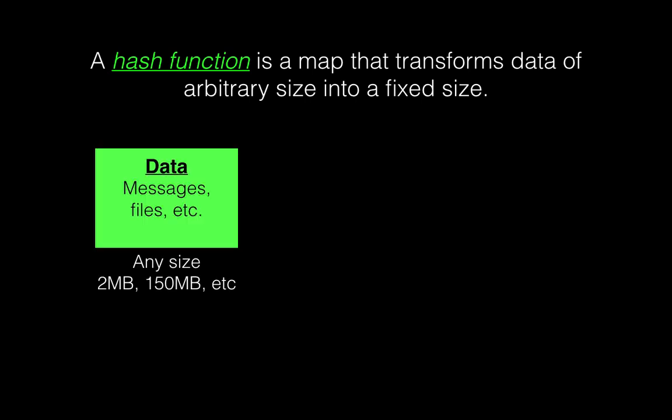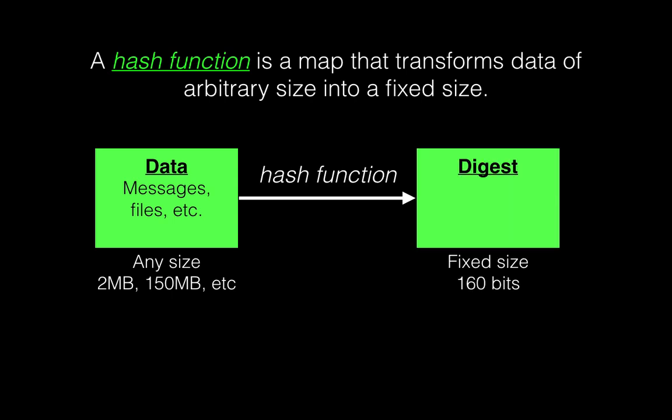So let's say you have data — messages or files of any size. For example, two megabytes, 150 megabytes, or even gigabytes. A hash function is going to transform that data into something we call the digest or the hash. The hash is a fixed size — in this particular picture, it's 160 bits. So it takes any size, 150 megabytes, 2 gigabytes, and all of those will become 160 bits. That's the hash or digest. Think of a hash function as a fingerprint of whatever data you are trying to encode.